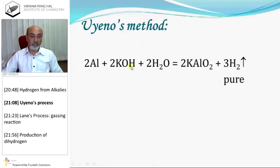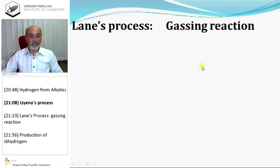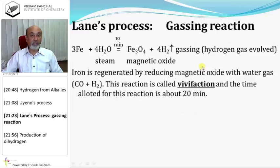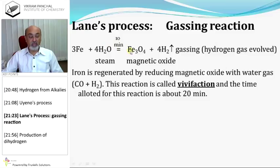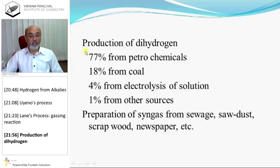Aluminium reacts with KOH in aqueous solution to give hydrogen gas; this method is used for military purposes. Lane's process: iron is treated with steam for 10 minutes to give magnetic oxide (Fe3O4) plus hydrogen gas. Iron is then regenerated by reducing the magnetic oxide with water gas; this reaction is called vivification and takes about 20 minutes.